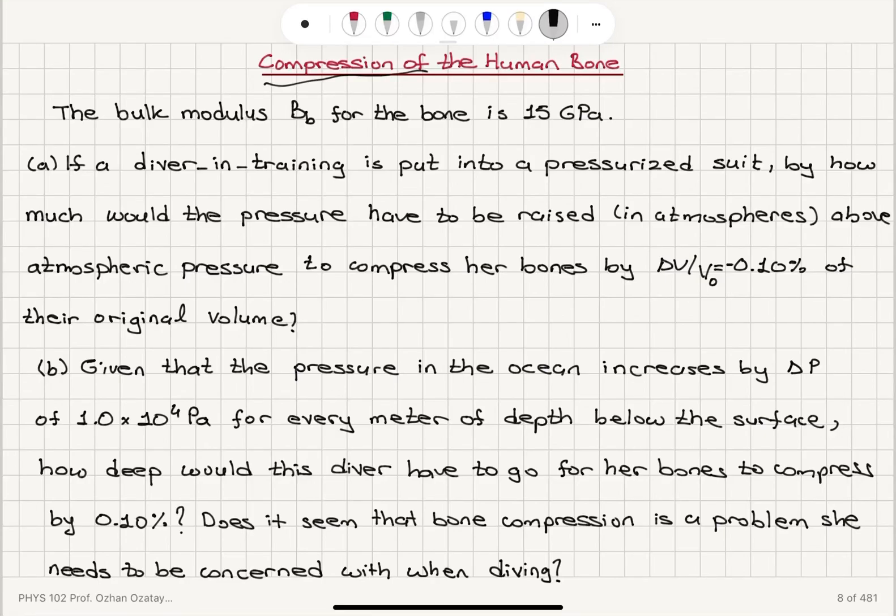Compression of the human bone. The bulk modulus Bb for the bone is 15 GPa. If a diver in training is put into a pressurized suit, by how much would the pressure have to be raised in atmospheres above atmospheric pressure to compress her bones by delta V over V0 equals minus 0.1% of their original volume?